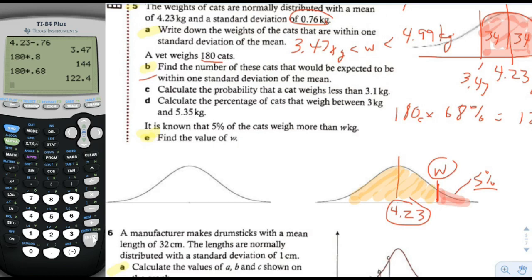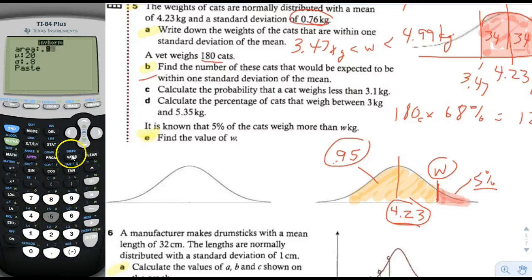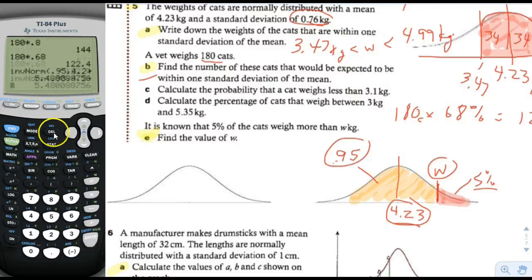If the right region is 5%, then the left region is 95%, or 0.95. So we give the calculator 0.95, mean of 4.23, and standard deviation of 0.76. We go to second dist, inverse normal, put a region of 0.95, mean of 4.23, sigma of 0.76, and it gives us a value of 5.48 kilograms. So W is equal to 5.48 kilograms.